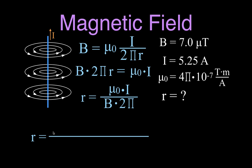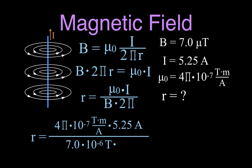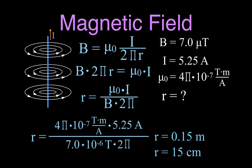Plugging values in: μ₀ is 4π×10⁻⁷ tesla·meter/ampere, times I of 5.25 amperes, divided by the magnetic field strength 7.0 microteslas — which is 7.0×10⁻⁶ teslas — times 2π. Make sure to use correct order of operations. The radius works out to 0.15 meters, which is 15 centimeters.